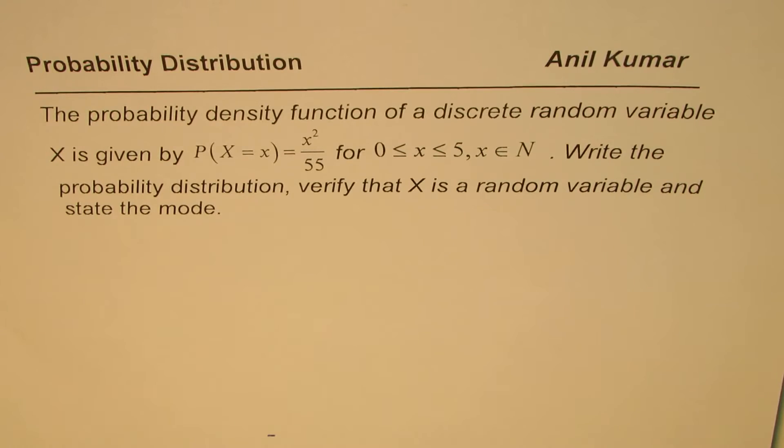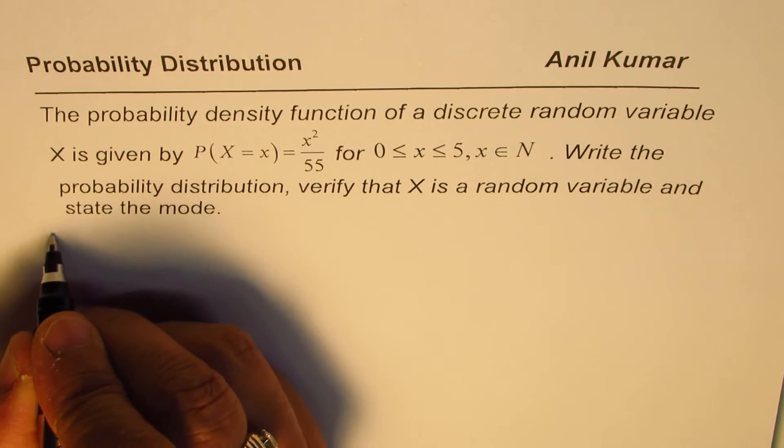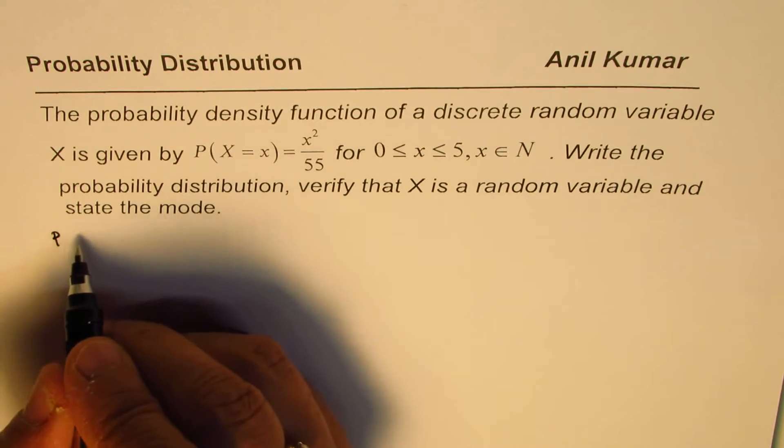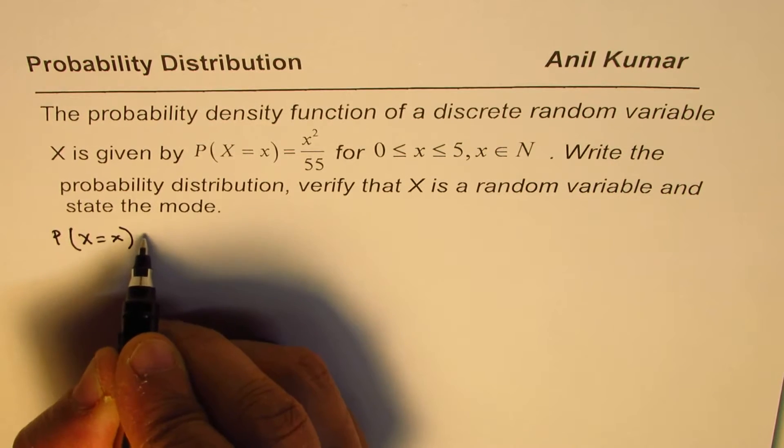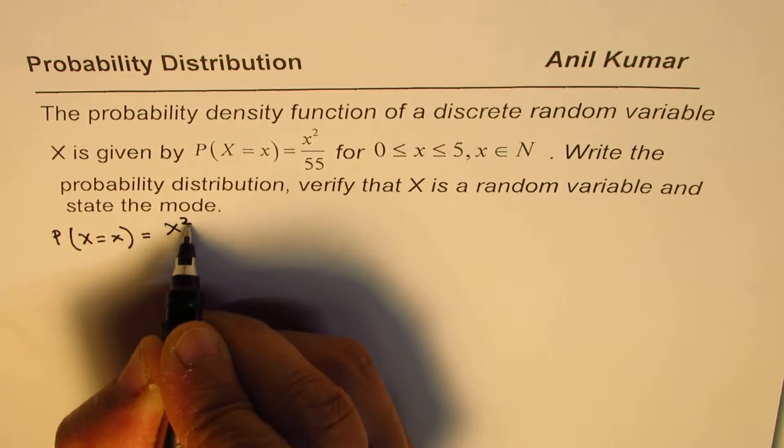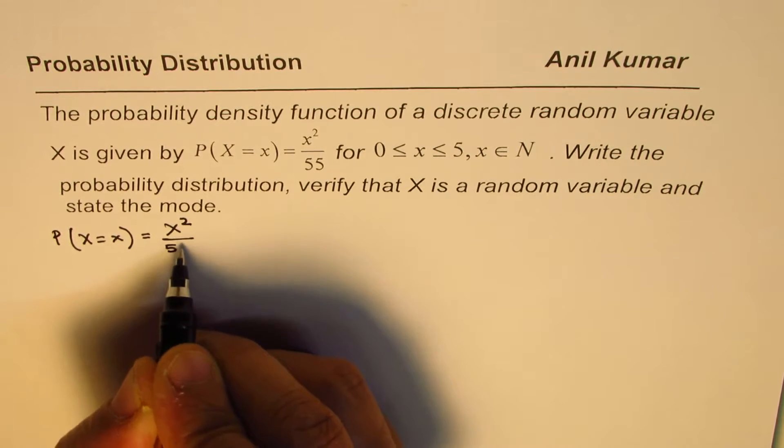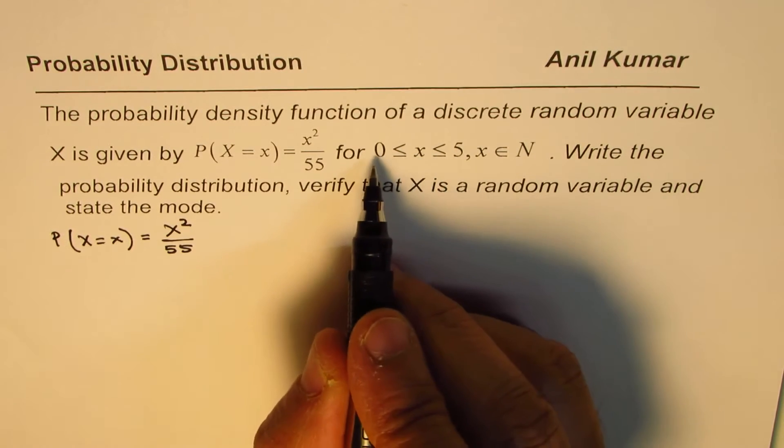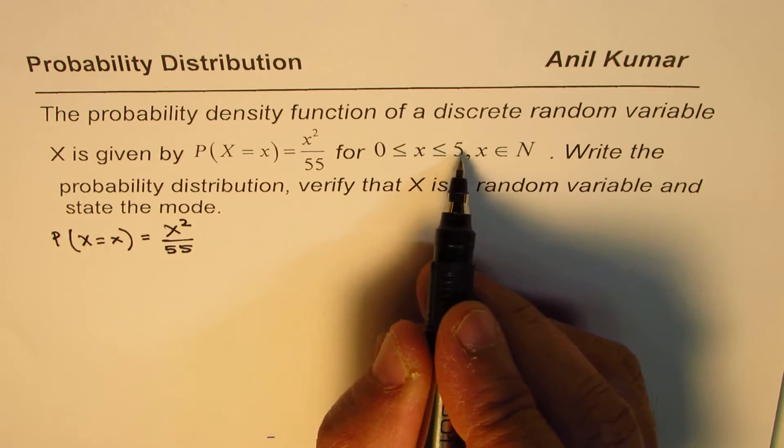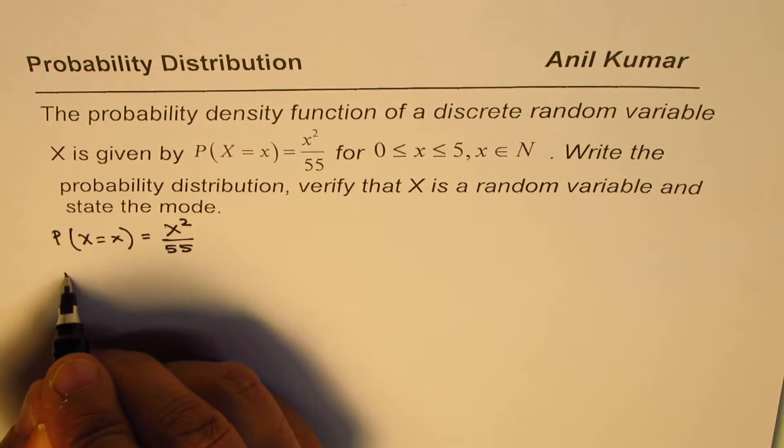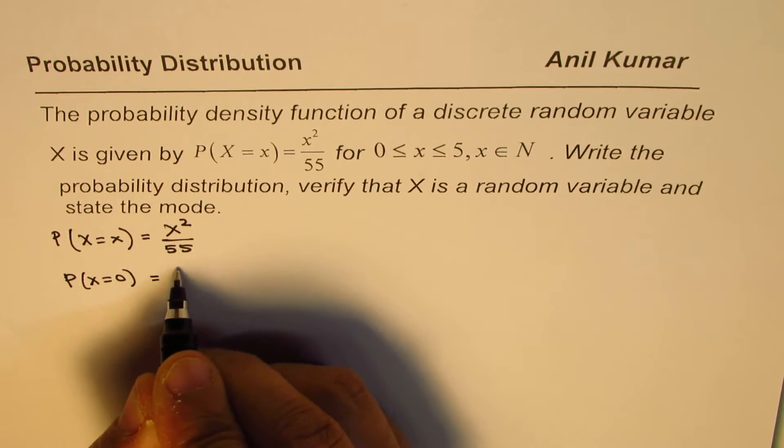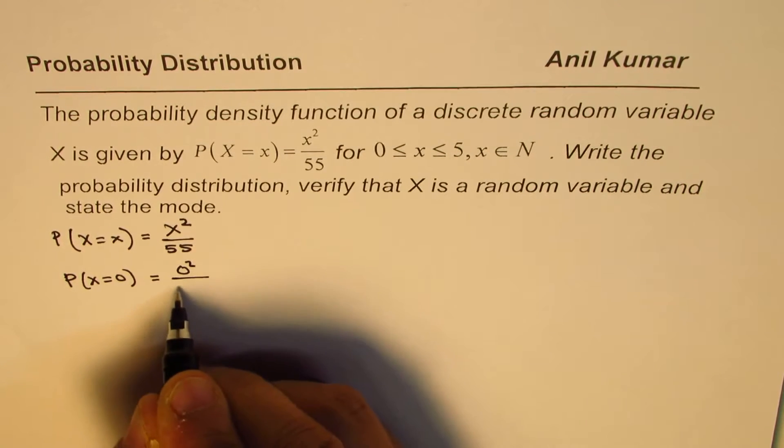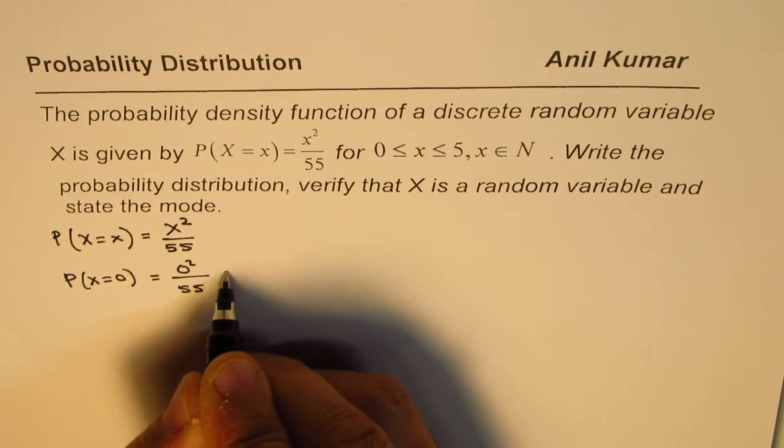So there are three things to be done here. What we are given is the probability density function equals x²/55. Now x could be 0 to 5. So let's find these values. When x equals 0, the value is 0²/55, so it is 0.